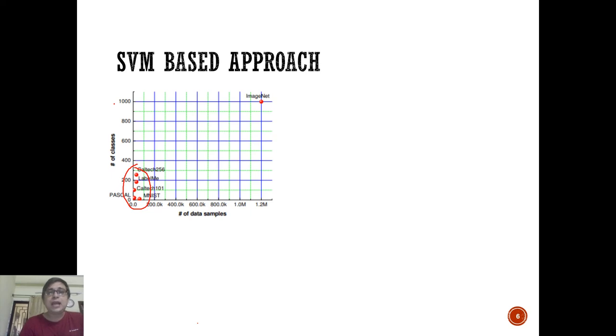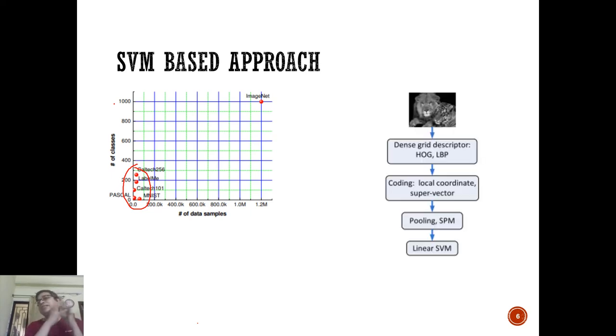The benchmarks that existed like Caltech-101, LabelMe, PASCAL are all in this region. Look where ImageNet is in terms of number of samples and number of classes - that's why we talk about ImageNet so much. It became the holy grail for any computer vision researchers. Here's a high-level schematic of what these guys were doing - dense grid descriptors based on feature extractors like histogram-based features or local binary patterns.